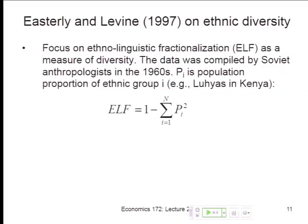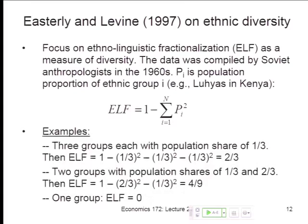This measure was popularized by Bill Easterly and Ross Levine. Ross Levine is now a professor here at Berkeley. Bill Easterly is giving a talk in Blum Hall at 2 o'clock tomorrow. In their 1997 paper, they took data on ethno-linguistic identity, using the definition of ethnicity based on language that people speak, which had been put together by anthropologists in the 1960s for every country around the world. For each country, the measure captures the share of the population that belongs to ethno-linguistic group I — P sub I, a proportion between 0 and 1.